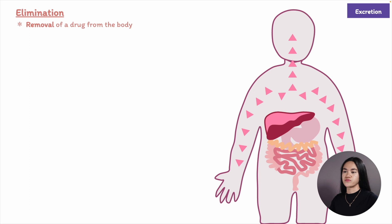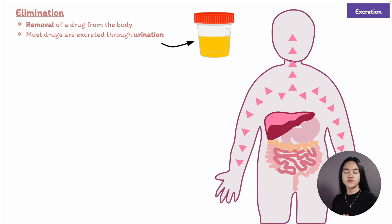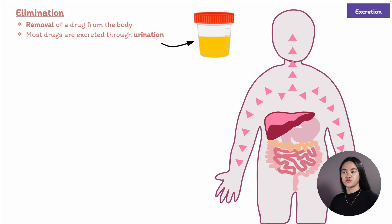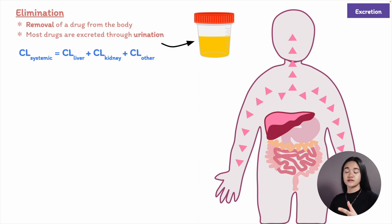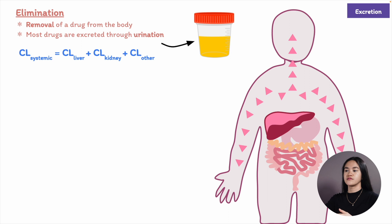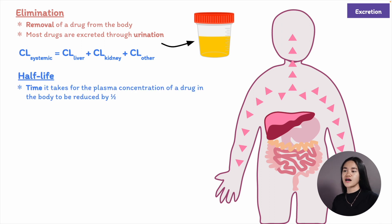Elimination involves both the metabolism and excretion of the drug. Most drugs are excreted in the urine; other processes occur in the liver, lungs, and other organs, so excretion can also take place through the bile and feces. This brings in clearance — the rate at which a drug is eliminated from the blood. Total body clearance is the sum of individual clearance processes such as kidney, liver, lungs, and muscle.